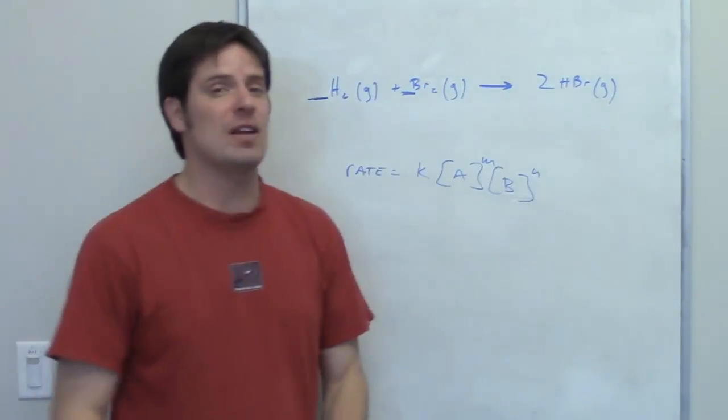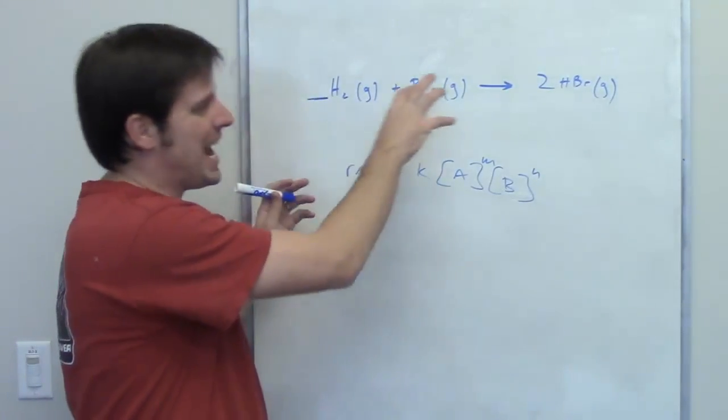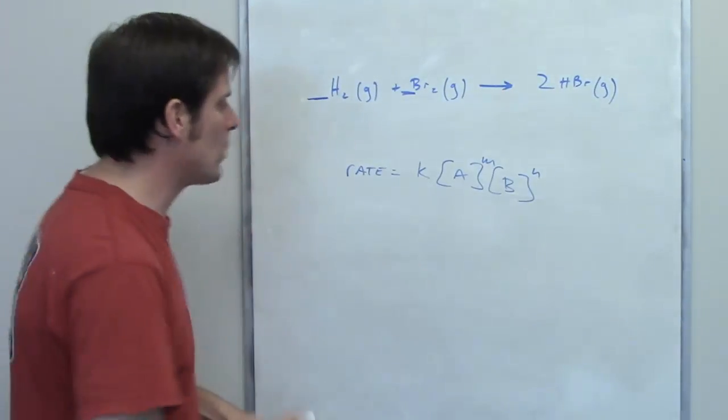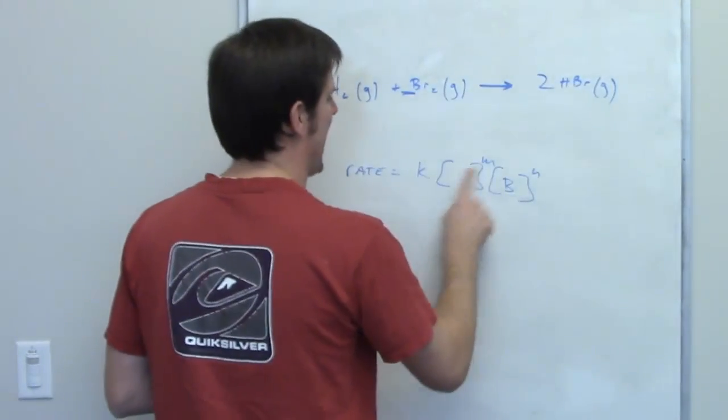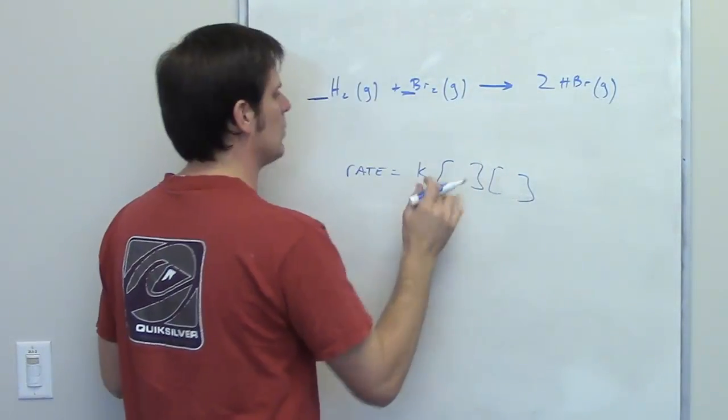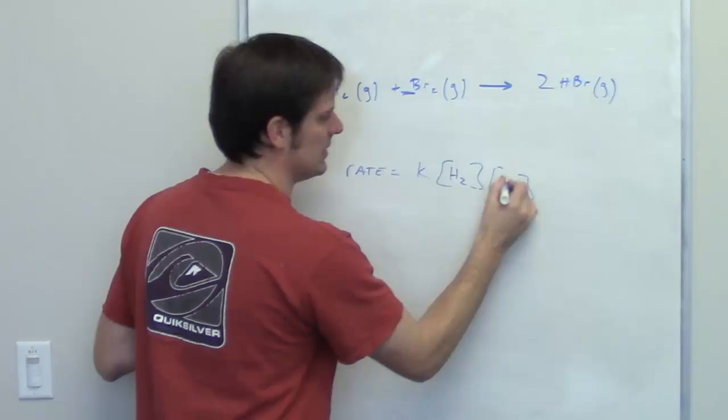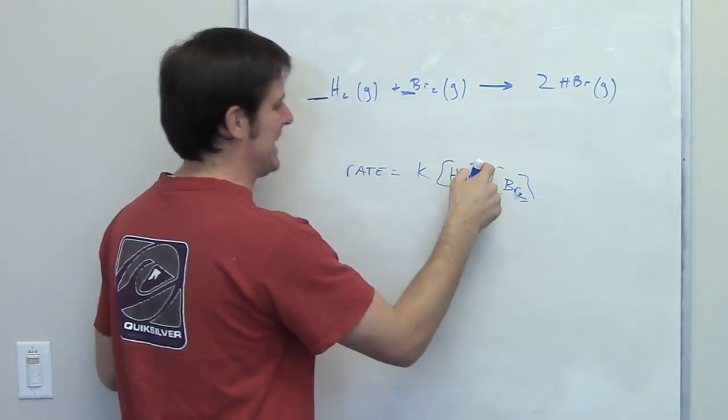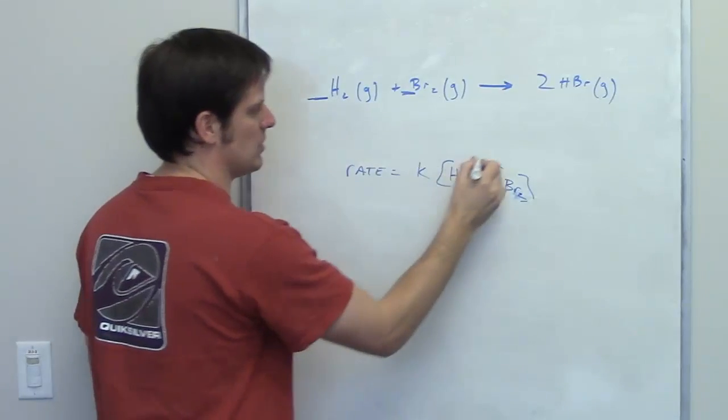As it turns out, if you know which reaction is the rate-determining step, which one is the slowest step, then the rate law for that step actually has the exponents equal to the coefficients. In this case, it'd be one and one. Hopefully that makes sense.